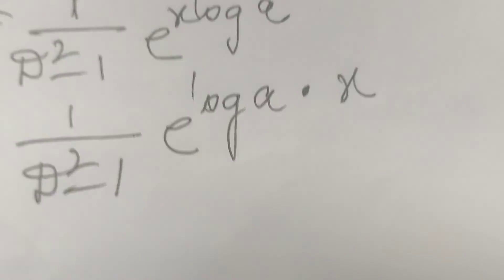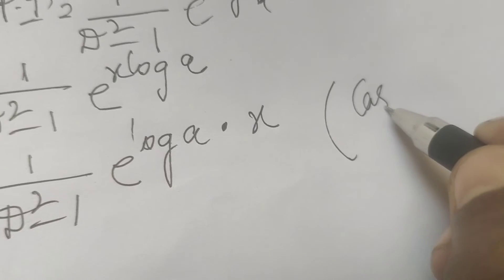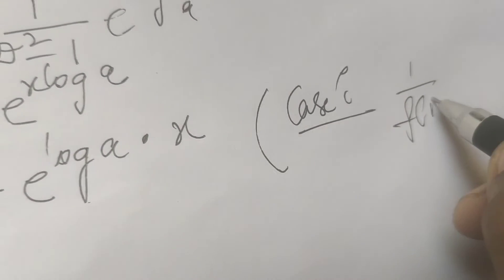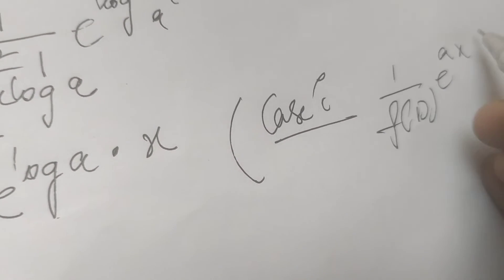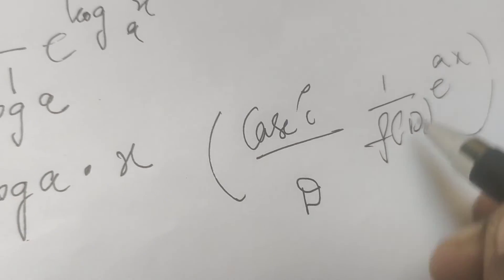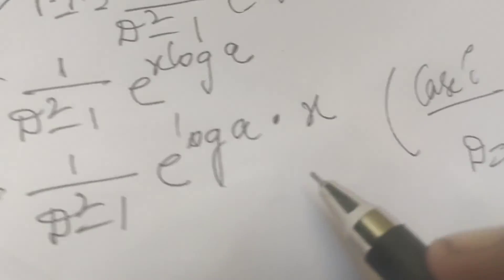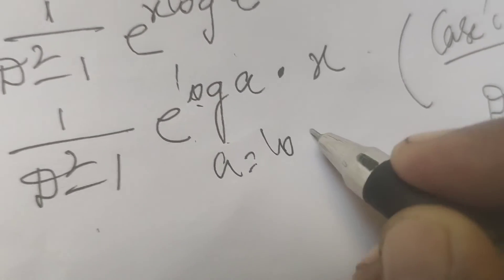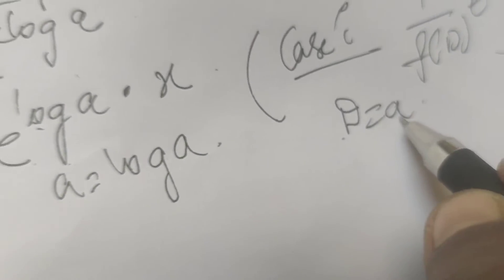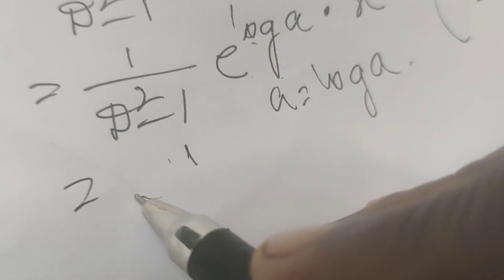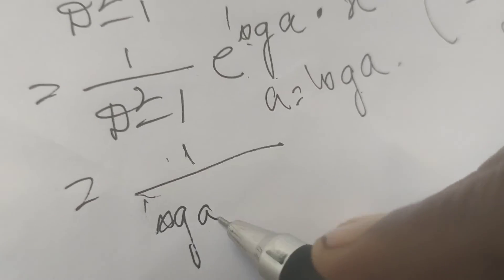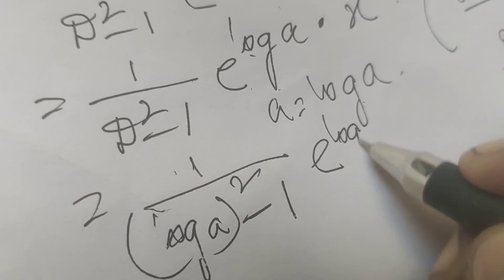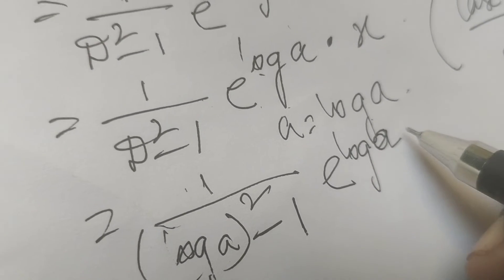This is Case 1: for 1/f(D) · e^(ax), substitute D = a. Here a = log a, so we substitute D = log a. This gives PI = 1/((log a)² - 1) · e^(x·log a).